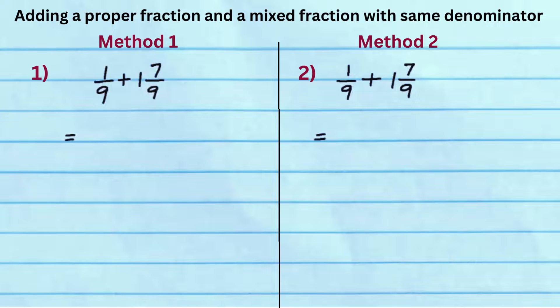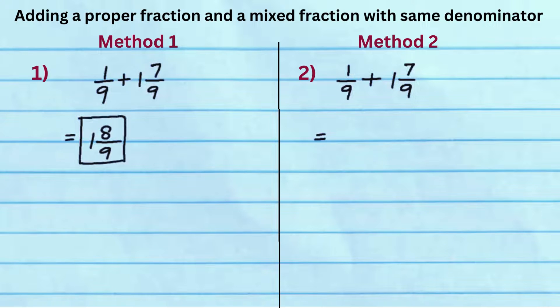In method 1 of this example, write the whole number 1, common denominator 9, and add the numerators 1 and 7 to get the answer 1 and 8 ninths.